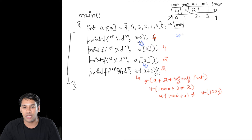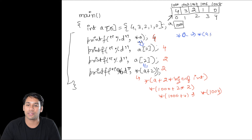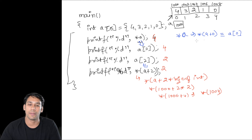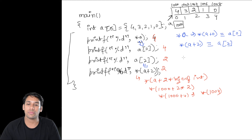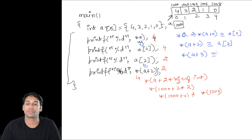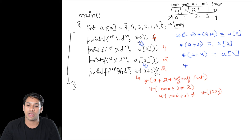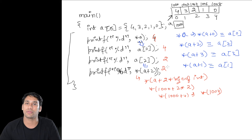When I say *a, this can be written as *(a + 0), which is equivalent to a[0]. When I say *(a + 2), this is equivalent to a[2] — accessing index location 2. When I say *(a + 3), this is equivalent to a[3] — accessing index location 3. When I say *(a + 1), this is equivalent to a[1] — accessing index location 1.